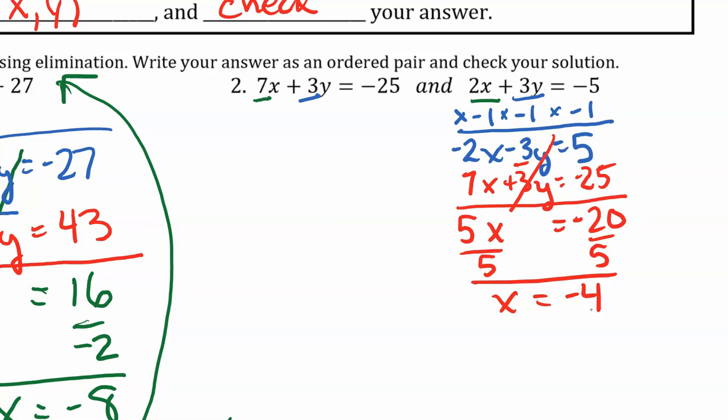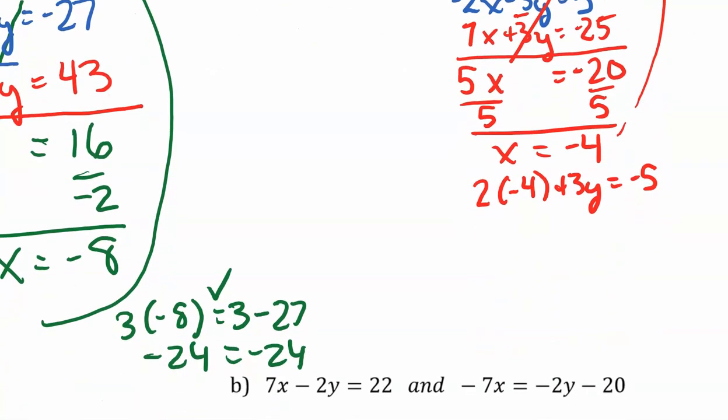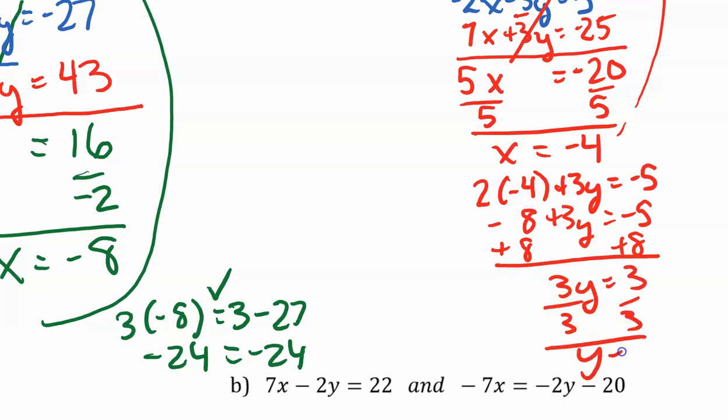Now I'm going to take that value and I'm going to substitute it into one of my equations. So 2 times negative 4 plus 3y should equal negative 5. 2 times negative 4 is negative 8. Negative 8 plus 3y equals negative 5. I have to isolate y. So I'm going to add 8 to each side. 3y equals 3. I solve. y equals 1. I'm going to write my answer as a coordinate. Negative 4, positive 1.